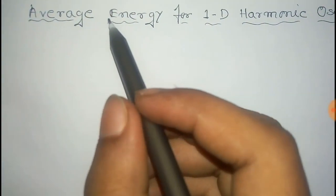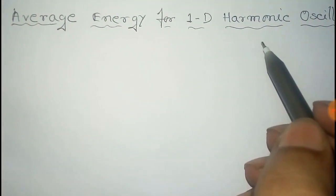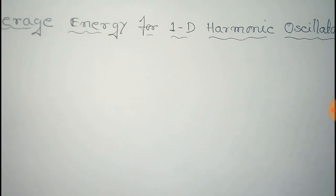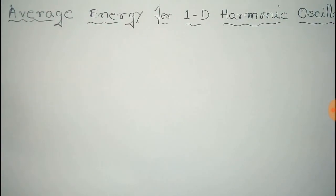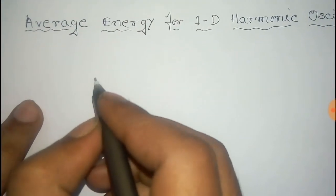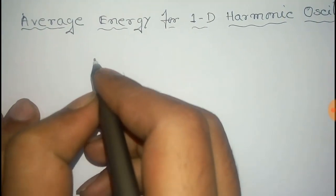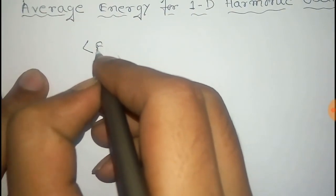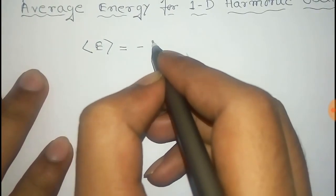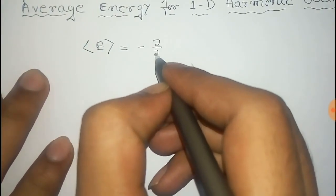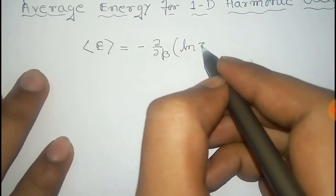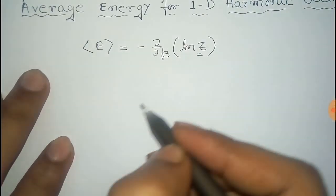We have to find the average energy for a one-dimensional harmonic oscillator. The average energy is given by minus del/del-beta of the logarithm of Z. We have already proved that.